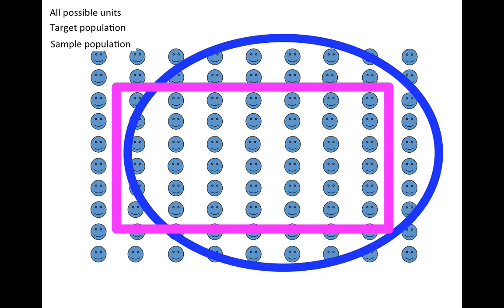For example, if we're thinking of a phone survey for an election, and we're trying to find out how people are going to vote, if I take the phone book for a certain region and say this is my sample population, I'm going to think about calling all the phone numbers in this book, some of those phone numbers are going to belong to people who are not eligible to vote. Maybe they're immigrants, maybe they're felons, there's some other reason they're not allowed to vote.